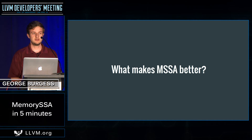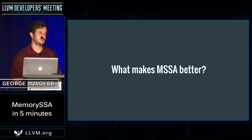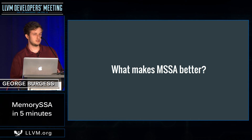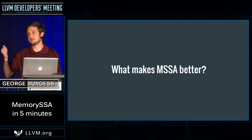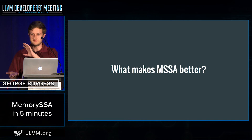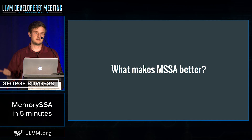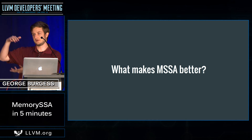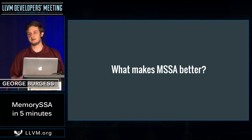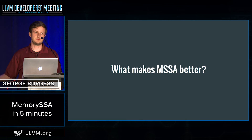What makes Memory SSA better is primarily just a question of algorithmic complexity. When you look at how Memory Dependence Analysis works, you essentially give it an instruction, it looks around that instruction, it kind of inspects your function, and it has a cache to make this a little bit better, and it has limits for how far it'll go and how much it'll inspect.